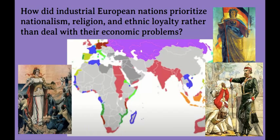Last question: how did industrial European nations prioritize nationalism, religion, and ethnic loyalty rather than deal with their economic problems? Karl Marx predicted that Europe's industrial countries would eventually become communist because workers would rebel and create shared property for everyone. This did not happen, and part of the reason was that European nations turned the focus of their people away from problems within Europe and onto the world — specifically, colonial domination of other people.